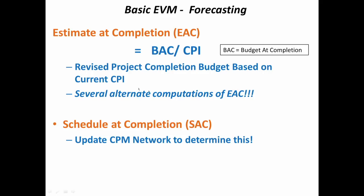This is one basic way of computing it. Most people recommend that for schedule at completion, go back to the network, update it, and estimate schedule at completion based on the network. Although earned value terminology gives an equivalent equation for schedule at completion, it is recommended to go back to the CPM network and update it to find schedule at completion.